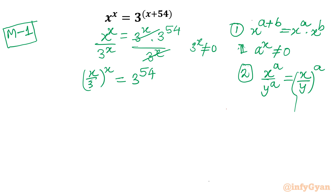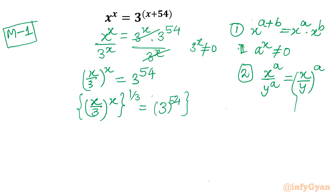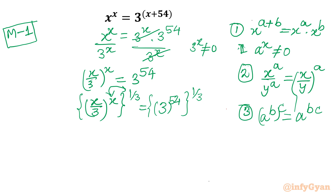Now I will take the cube root of both sides. So I write (x/3)^x whole to the power 1/3. Using the third property of exponents — (a^b)^c = a^(b·c) — I multiply the powers. This gives (x/3)^(x/3) = 3^(54 · 1/3).